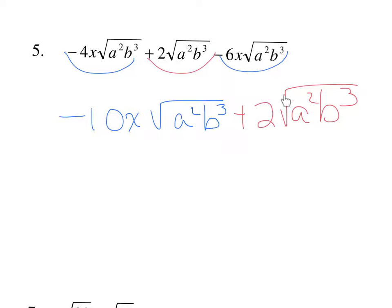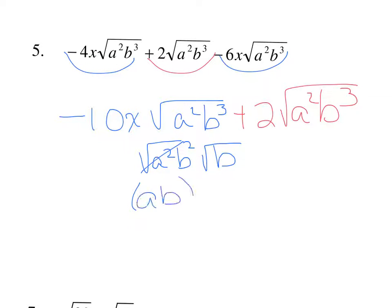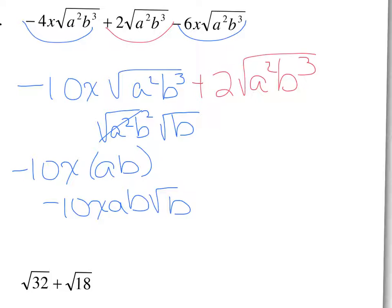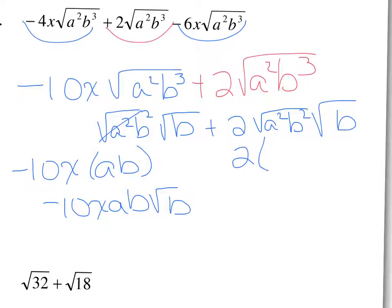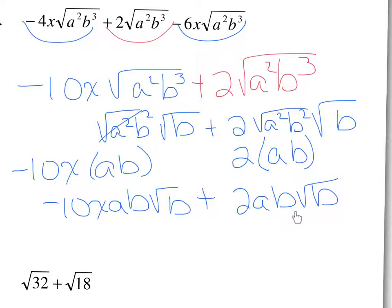I can't add negative 10 and 2 together because of the x. Also these radicands are not simplified, so we need to simplify them. For a squared b cubed, the perfect parts are a squared and b squared, leaving b as the not-perfect. So we get negative 10x times ab, which is negative 10xab square root of b. The second term similarly gives plus 2ab square root of b. But we still cannot add them because one has an x and the other does not.